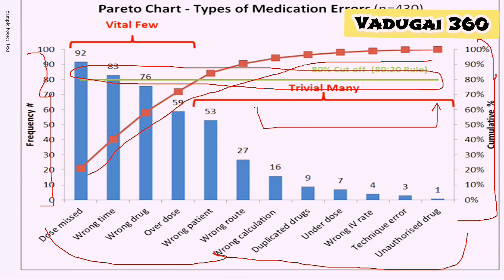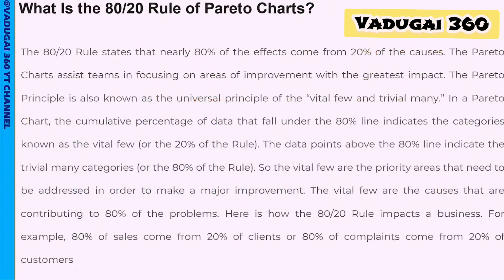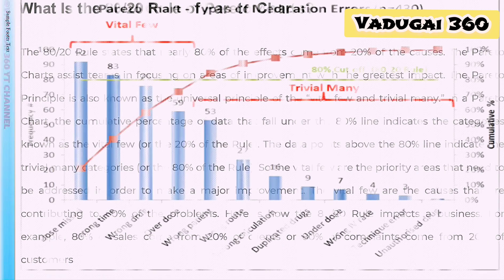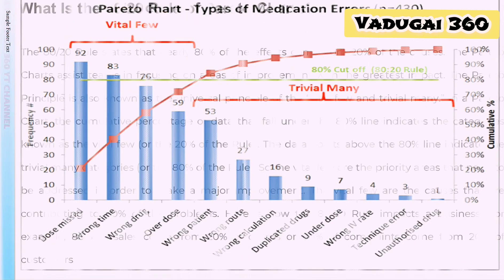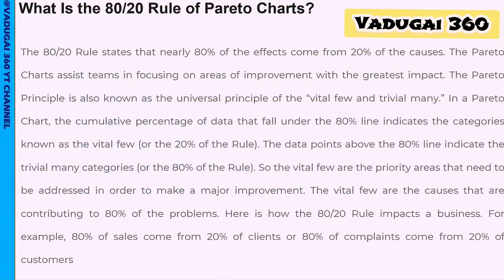This is the Pareto chart — the issues are shown by frequency, and a cumulative percentage curve line is plotted. The 80-20 principle is clearly visualized. The Pareto principle is shown with the chart at the end of the analysis.